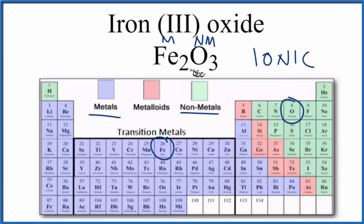So we could say Fe2O3 is ionic based on the periodic table in this definition of a metal and a non-metal.